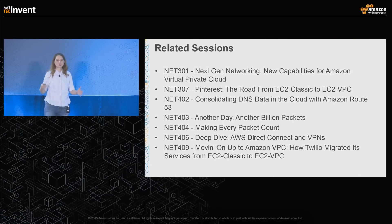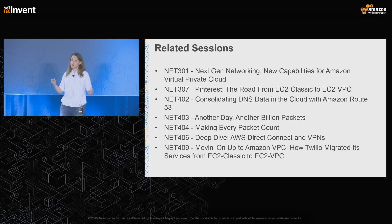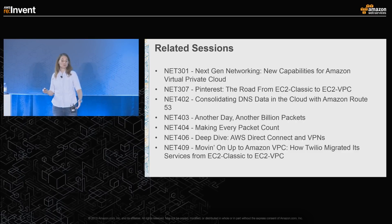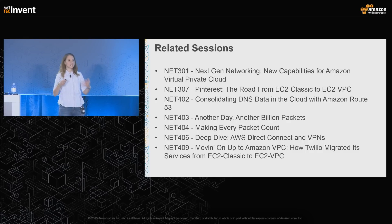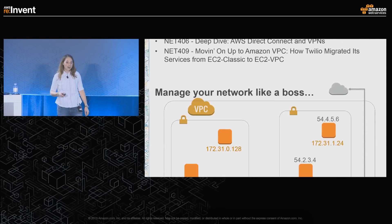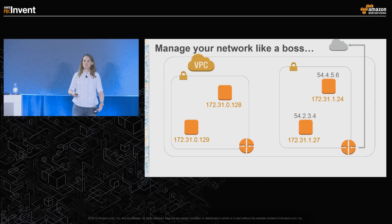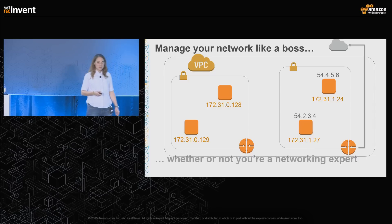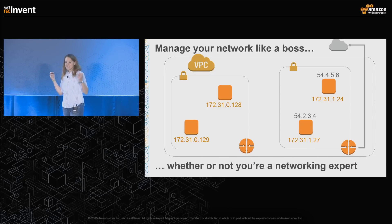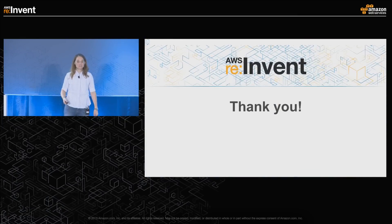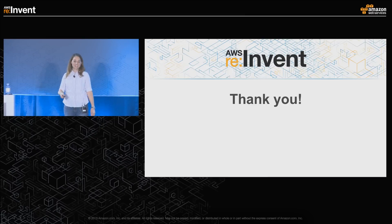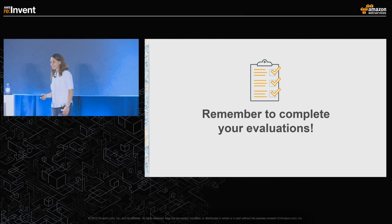There is so much more you're not even close to done with VPC — although you now understand what you need to have a network for your EC2 instances that just works. There's a whole bunch of talks later this week with deep dives into various aspects of VPC and surrounding services like Route 53 and Classic to VPC migration. All of this allows you to manage your network like a boss, whether or not you're a networking expert — easy, flexible, and visible. Thank you so much for being here, and please remember to fill out your evaluations.